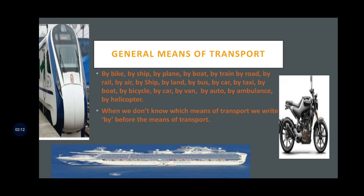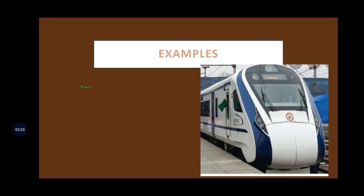Let us see some examples. We went to Bangalore by train. What is the means of transport used here children? Train. So which preposition do you have to use? By. We went to Bangalore by train. You can say: I went to Bangalore by train, my friend went to Bangalore by train. We travel to Andaman by ship. She can reach there fast by train. What is the preposition used here children? Yes, it is by.